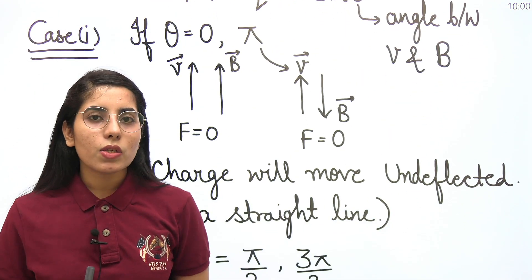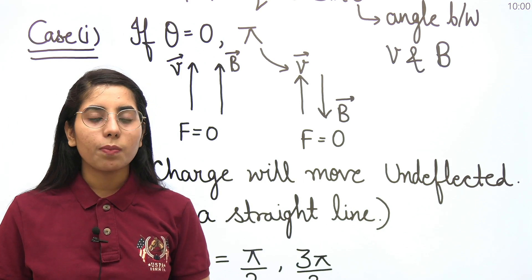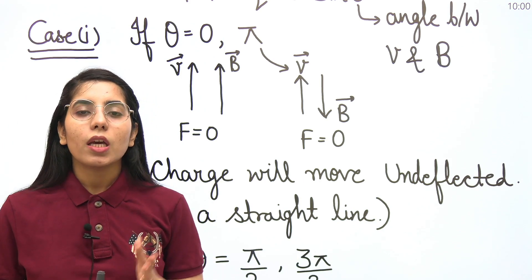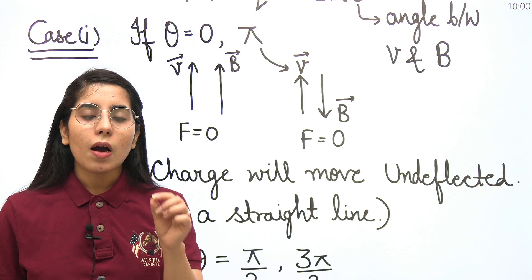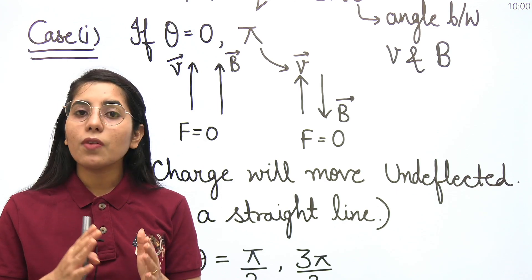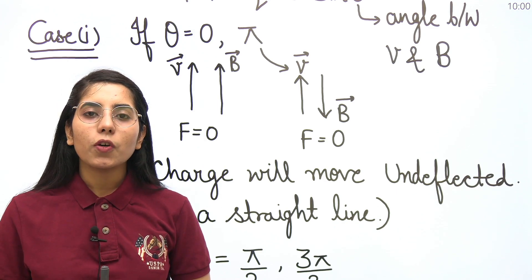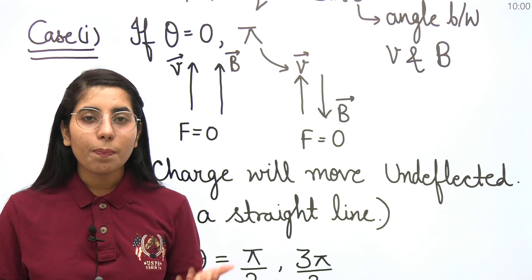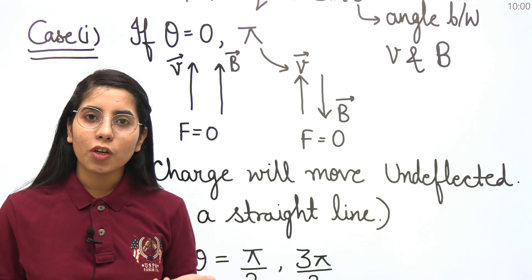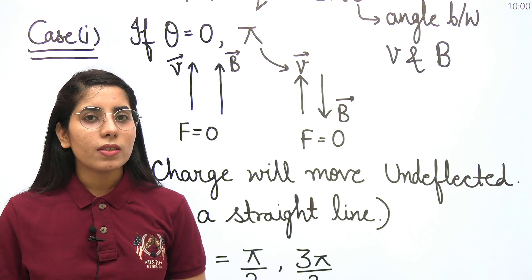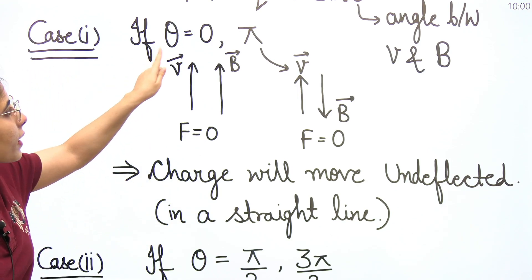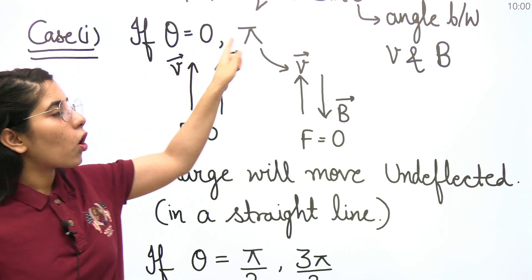In this video we are mainly going to cover the important trajectories — which means if there is a particular angle theta between V and B, what kind of path the particle will trace, or what kind of trajectory you will get. That's the discussion we will do in this video today.